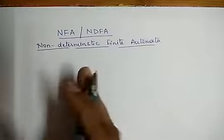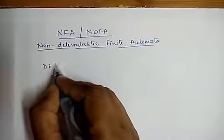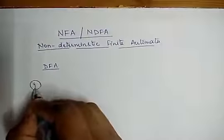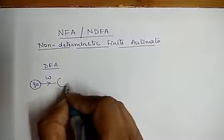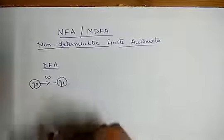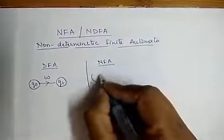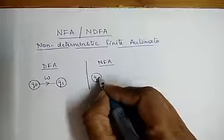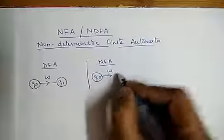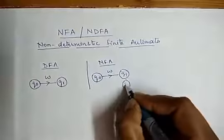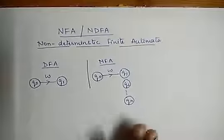The basic difference between NFA and DFA is that in case of DFA, if I have one state and I put a single input W, it moves to a single output, that is Q1. But in case of NFA, if I have an initial state Q0 and I put an input W, it can move to more than one state: Q1, Q2, up to Qn. So this is the basic difference between DFA and NFA.